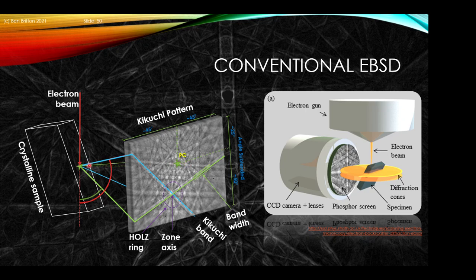There is a detector distance involved that we've discussed briefly. There will also be characteristic zone axes, which are effectively the intersection of different planes — a direction in the crystal, broadly worked out as the cross product of two planes — giving rise to the zone axis line. There is also something called the higher-order Laue zone ring, which can be useful for certain applications such as lattice parameter measurements in certain crystal systems.